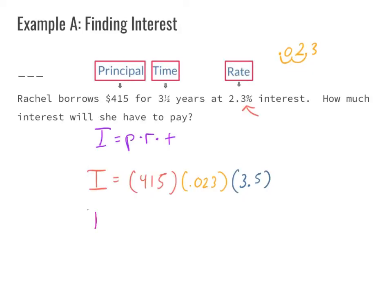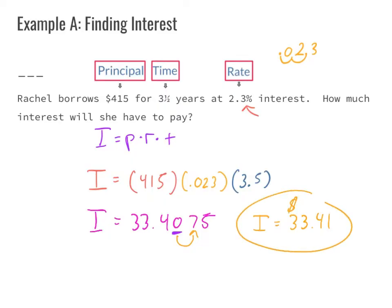Our interest was 33.4075. Since we don't have four decimal places in money, we round to the hundredths place. Looking next door — five or greater, add one more — so our final answer is: the interest is $33.41. It's very important to use a dollar label because anytime we have a word problem we need a word answer.